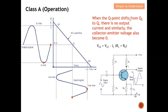Next, when the Q point shifts from Q2 back to Q, they return to the original operating point. There will be no output current — the collector current is again at zero — and the collector-emitter voltage also returns to zero. With this, you have an idea of how the AC load line and DC load line affect the performance of the transistor.